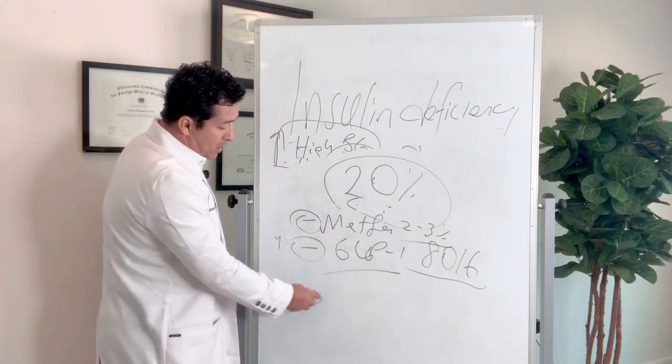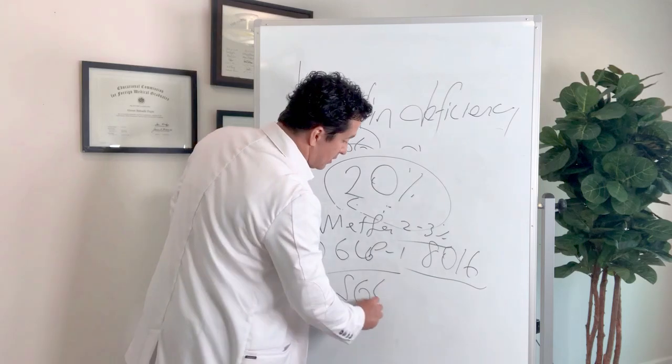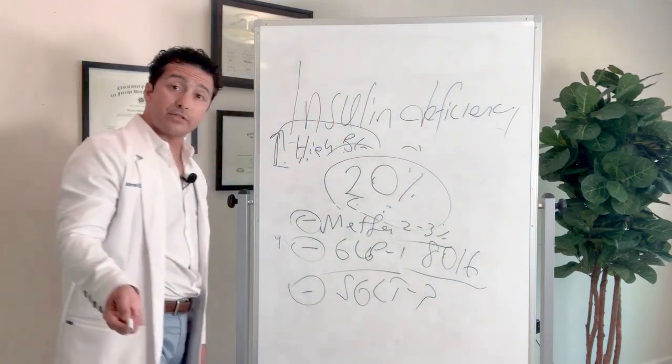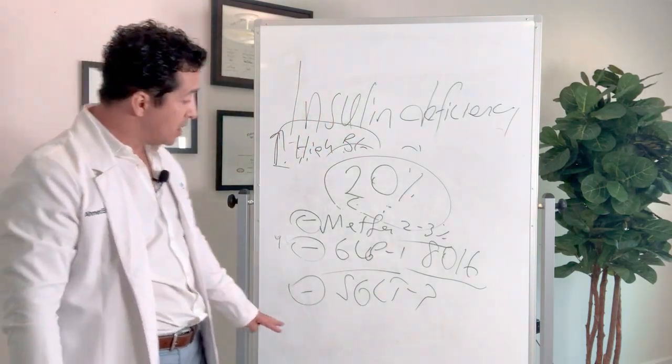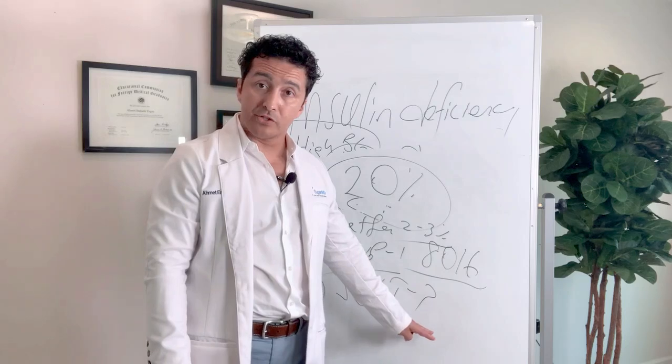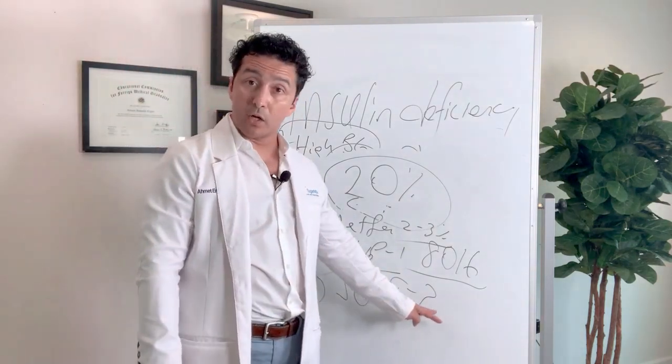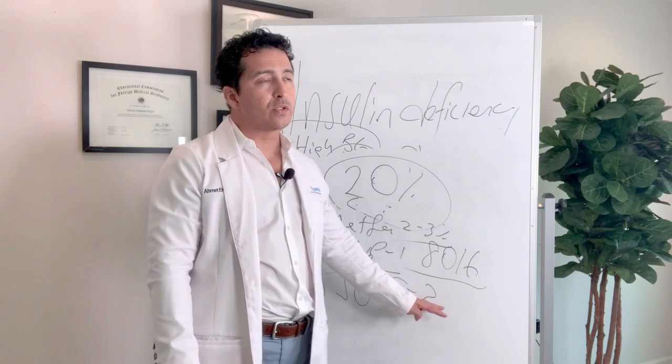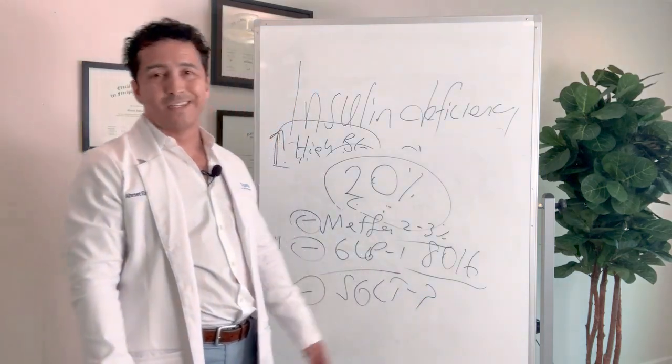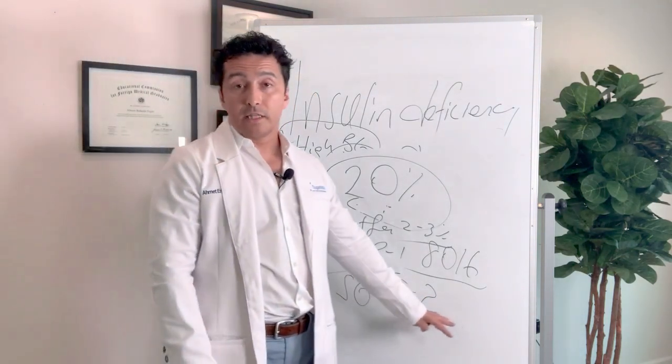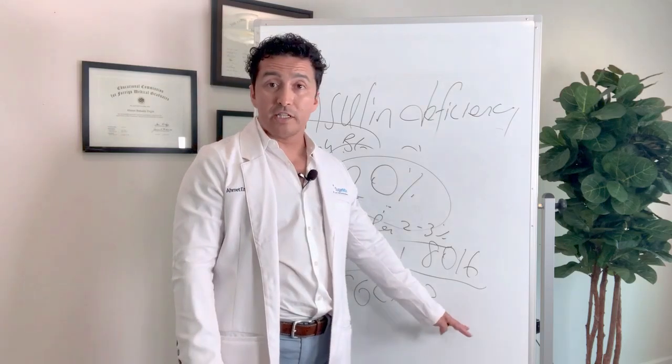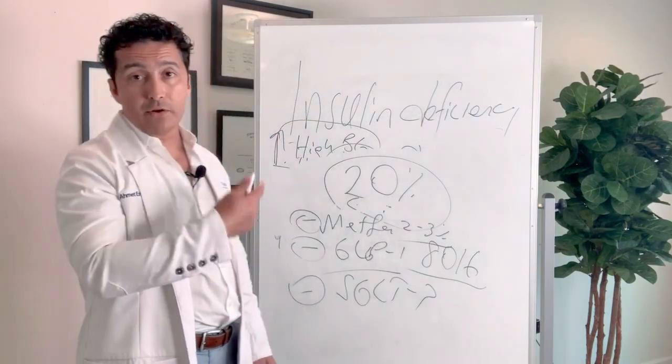Now, the SGLT-2 class, which is your Jardiance, your Farxiga, Invokana, etc., they also cause significant weight loss. Not as much as GLP-1, but people can also lose a lot of weight. But there's a limit with those. I'm not seeing really people losing more than 15, 20 pounds on these, but still, they can cause weight loss. So if you started these and you didn't know that they can cause weight loss, now you know.